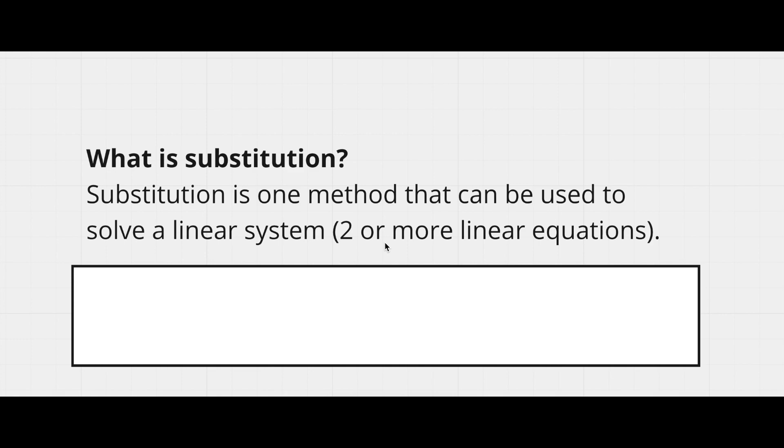Now a linear system is two or more linear equations. So in our previous videos we talked a little bit about linear equations, and basically a linear system is two or more linear equations together.